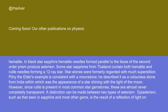Star stones were formerly regarded with much superstition. Pliny the Elder's example is consistent with a moonstone. He described it as a colorless stone from India within which was the appearance of a star shining with the light of the moon. However, since rutile is present in most common star gemstones, these are almost never completely transparent.